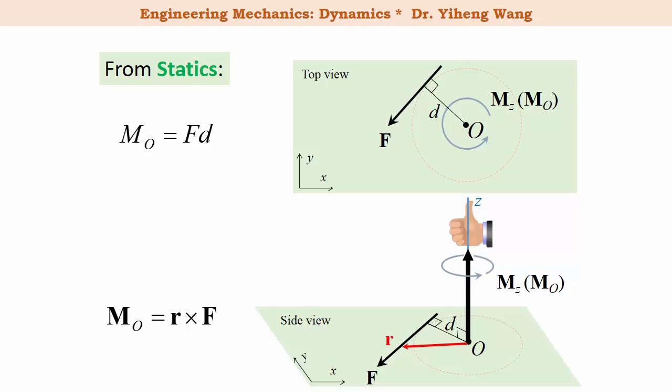In vector form, the moment is calculated by the cross product of a position vector and the force vector. The position vector must start from this reference point, but it can end anywhere along the line of action of the force.